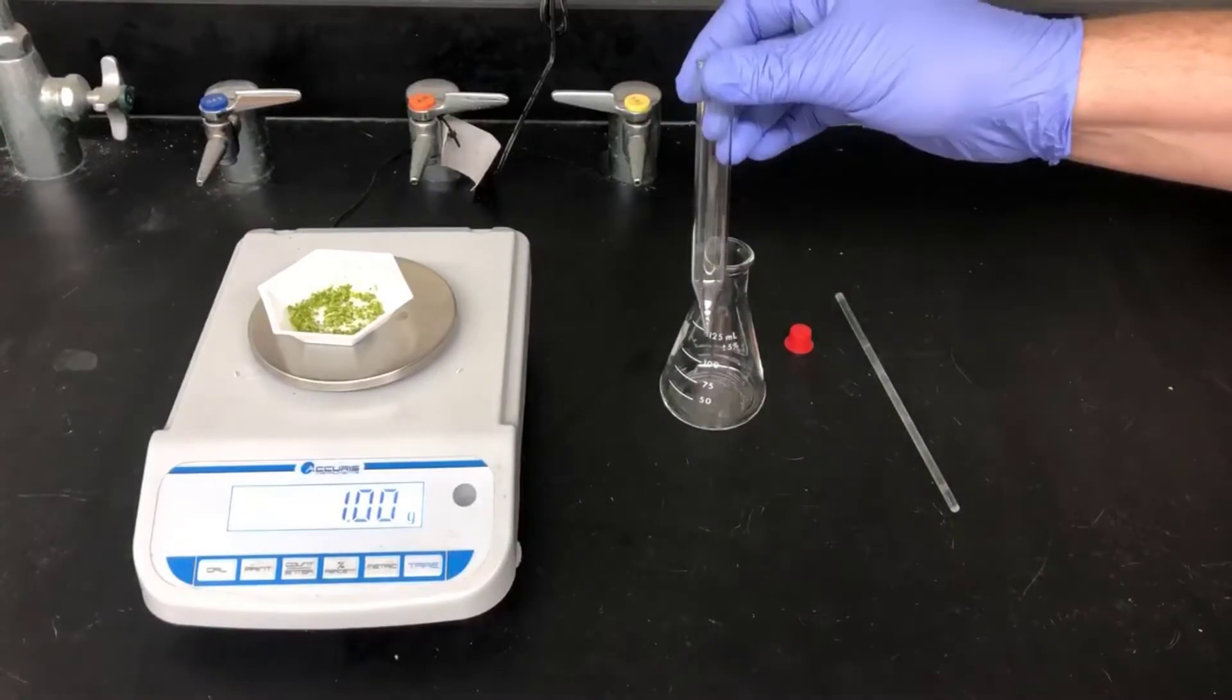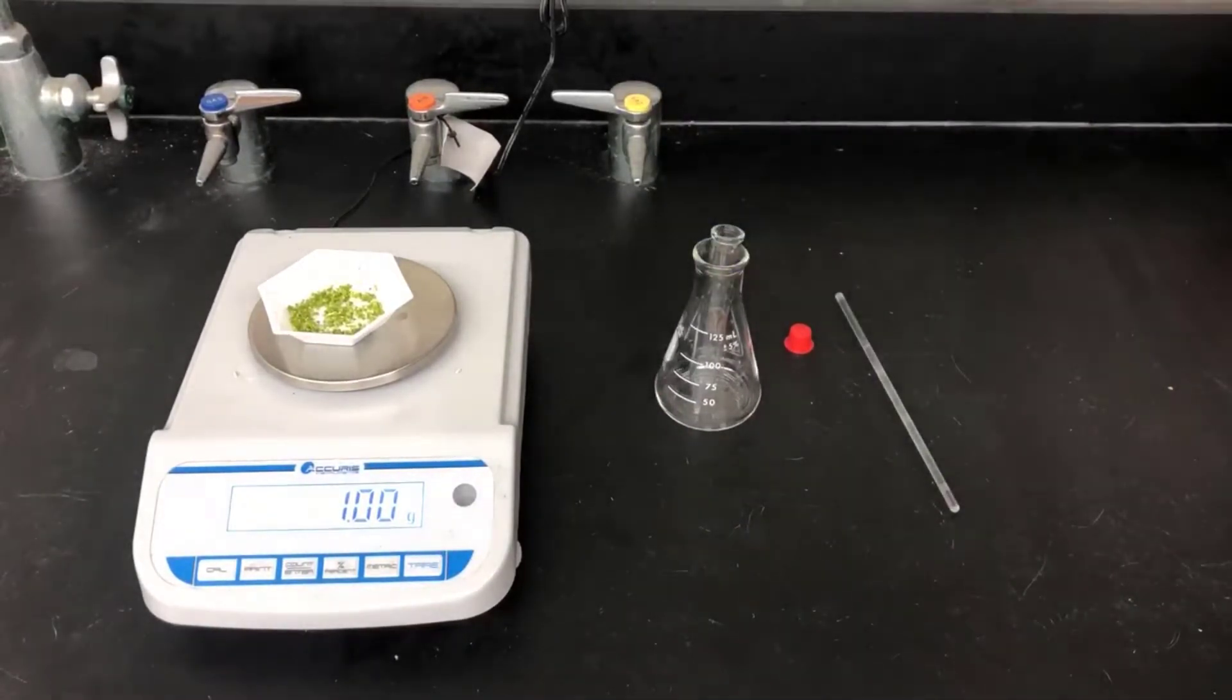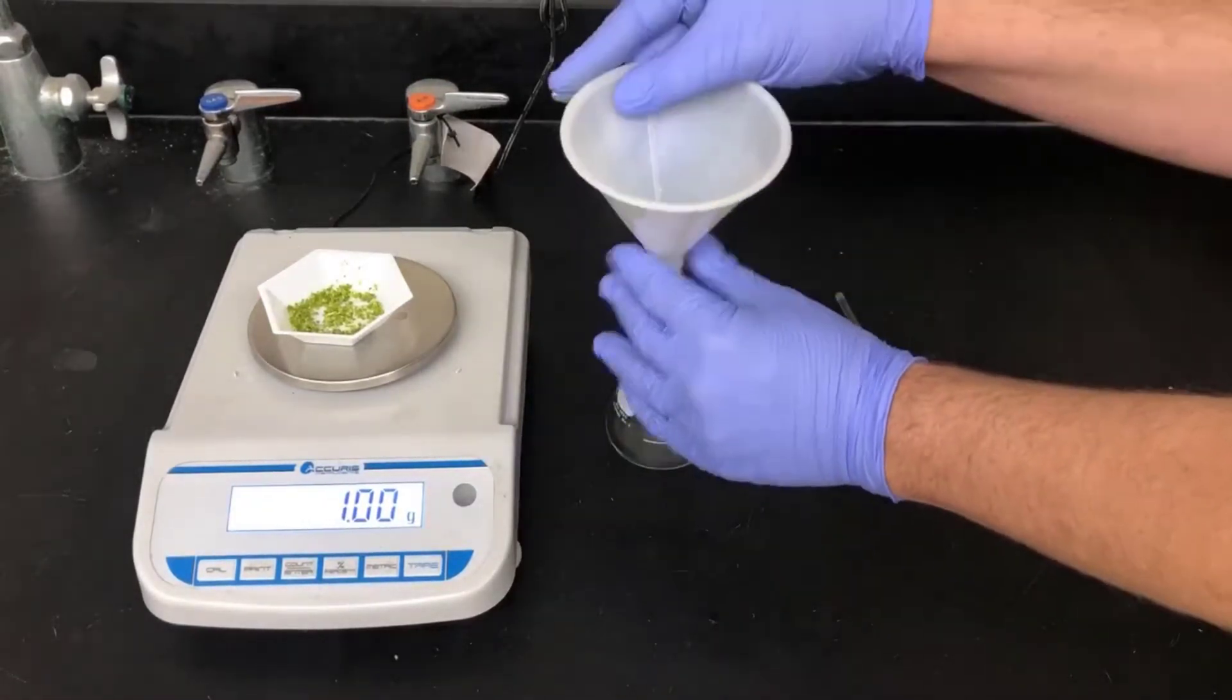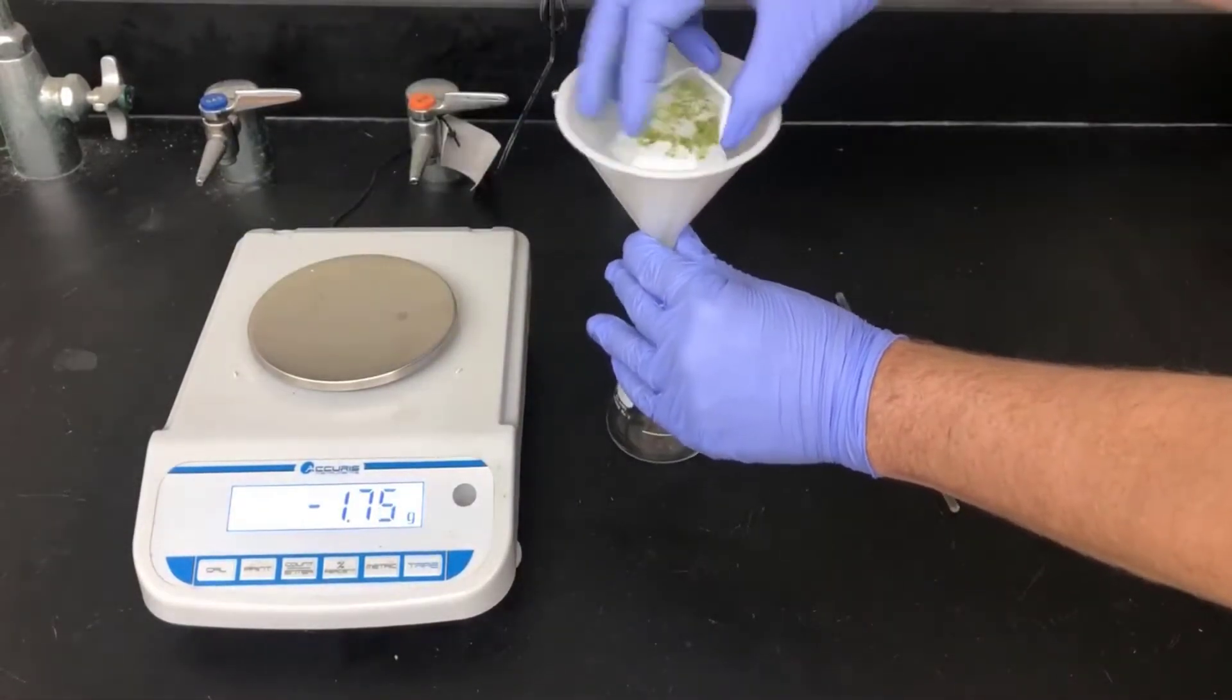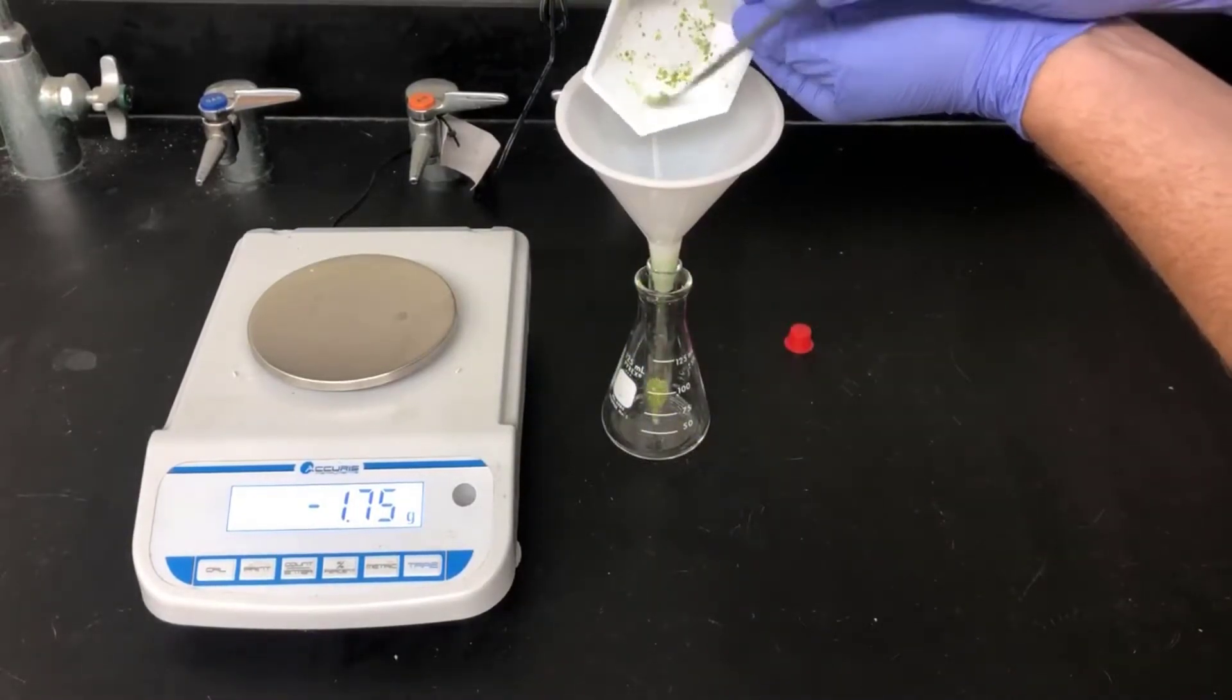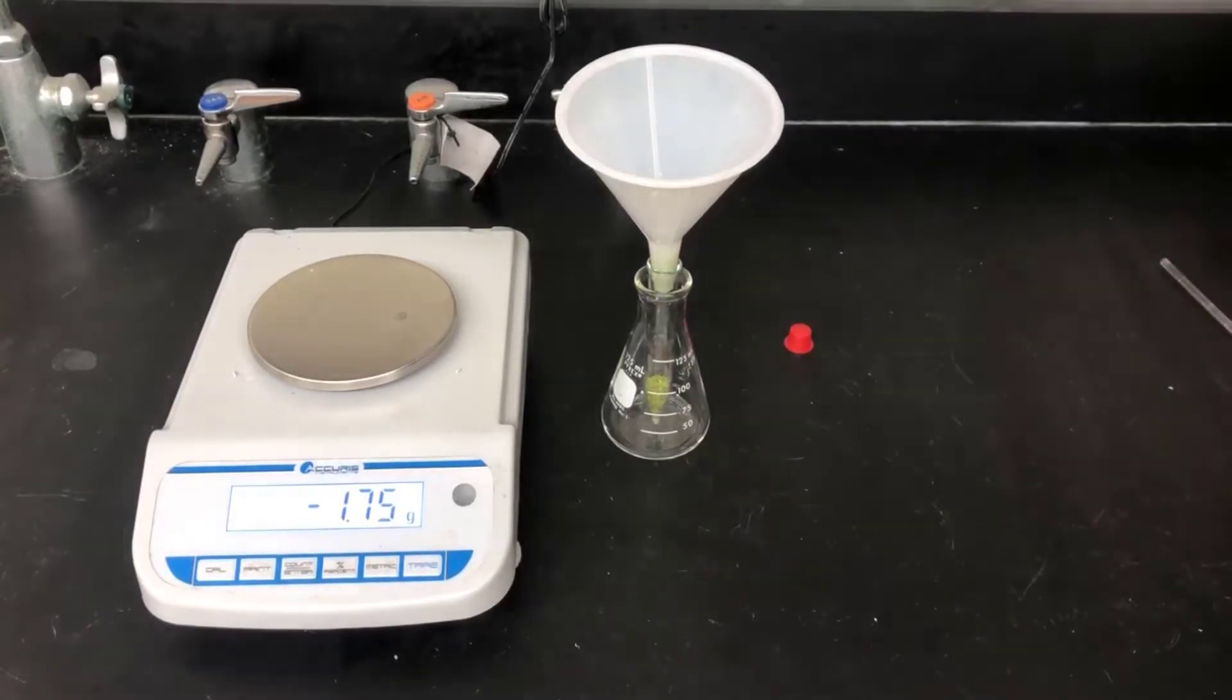I'll be using this point bottom centrifuge tube to do the extraction today. The next thing will be to get the lime zest into this tube. I've got a funnel here that'll work well for demonstration purposes. You don't necessarily need a funnel. You can scrape it in with a spatula. It just takes a little bit longer. Whatever method you'd like to use, just get the lime zest into the test tube.